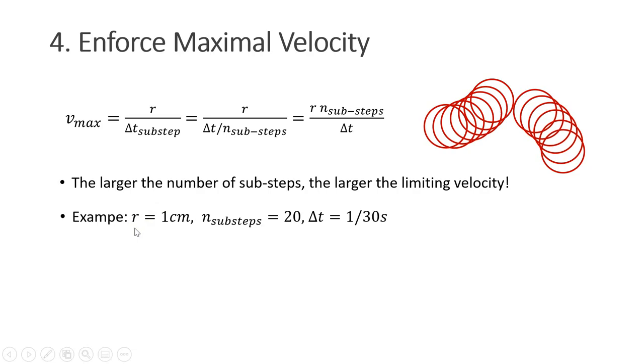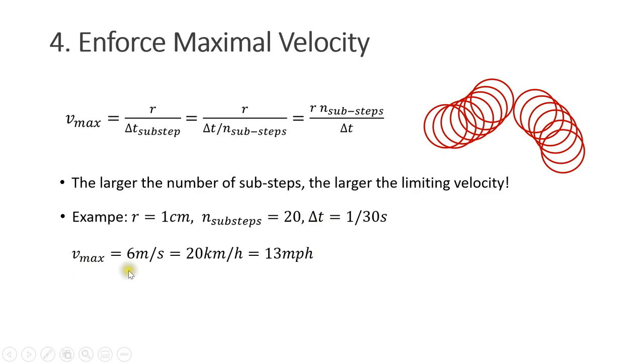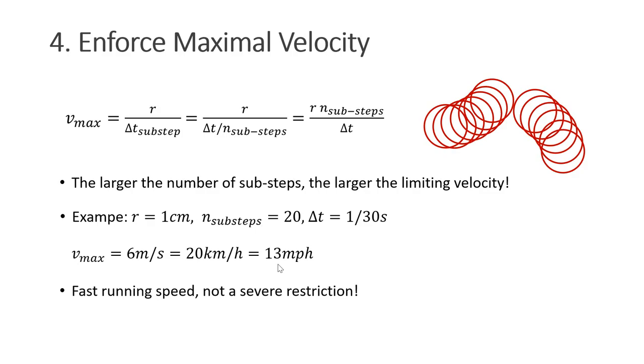Let's do an example here. Let's say the radius of a particle is one centimeter. We have 20 substeps and the simulation time step is a thirtieth of a second. In this case, we get a maximal velocity of 20 kilometers per hour or about 13 miles per hour. This is the speed of a fast running character, so it's not a severe restriction.